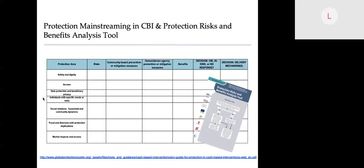The most important considerations for designing programs where protection principles are mainstreamed include detecting protection risks and putting mitigation measures in place. Protection must be mainstreamed throughout the CBI program cycle. In programs where protection is mainstreamed, protection principles are incorporated into sectoral interventions with an objective to meet one or multiple basic needs such as food security, nutrition, shelter, or livelihood support, where cash or vouchers are used as a response modality.